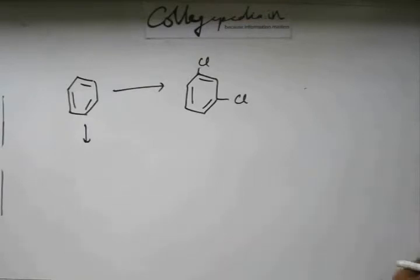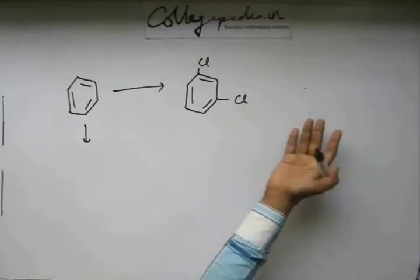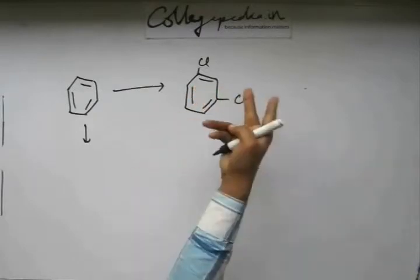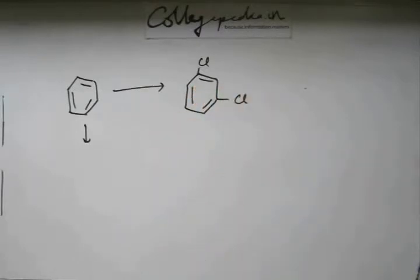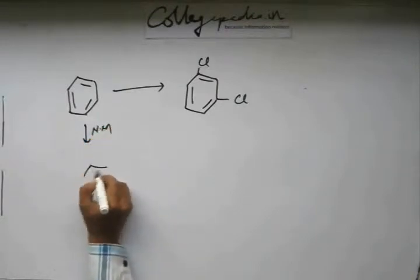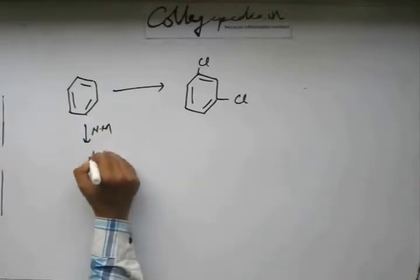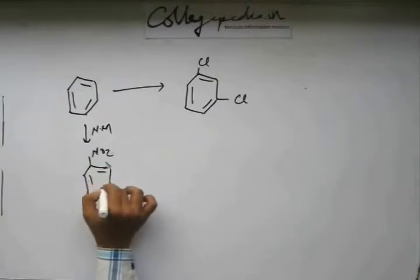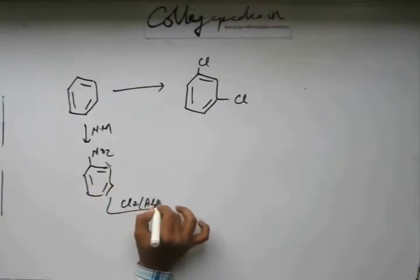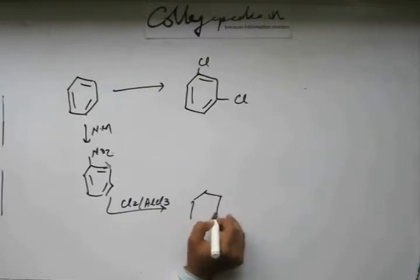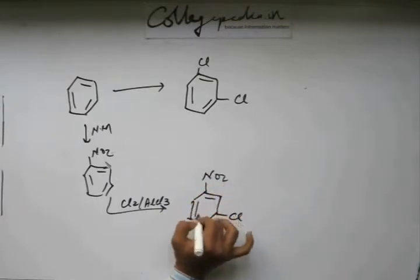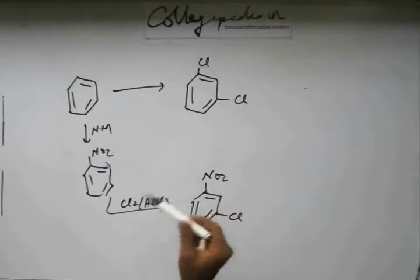You have to think of something else. Get a group which is meta-directing, get a chlorine at meta, and then convert that group into chlorine. The idea is: add nitrating mixture, get a nitro group, make it nitrobenzene. Now do chlorination - add Cl2, AlCl3. The chlorine group will come at the meta position.